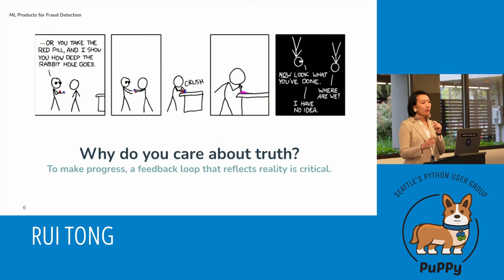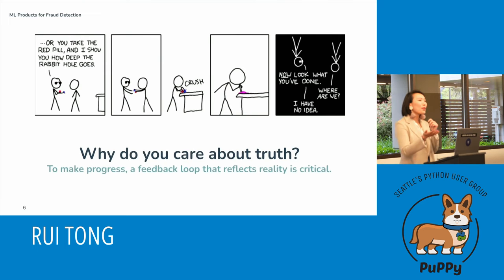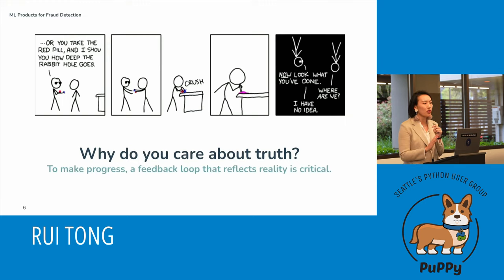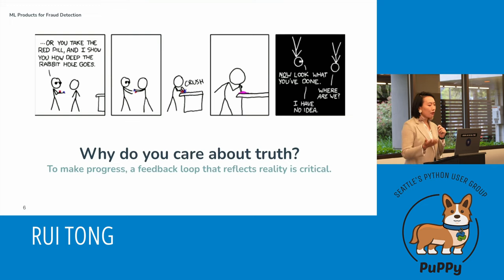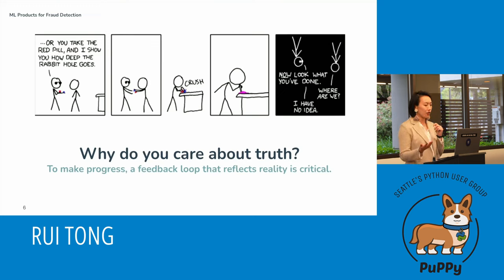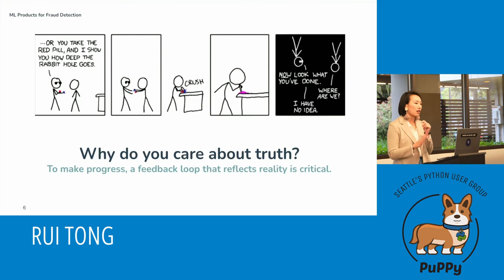If you care about truth, you'll understand why this matters. To make progress, a feedback loop that reflects reality is just critical. In the context of building ML products for fraud detection, the truth here refers to model performance. I'm going to start spelling out all the fun complexities that obstruct our view of the truth.